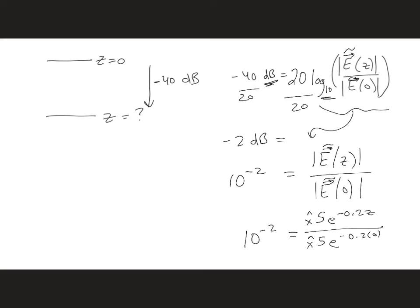Now, first of all, we can cancel the x hats and cancel the 5s, and we end up with 10 to the minus 2 is equal to e to the minus 0.2 z.